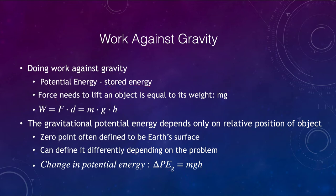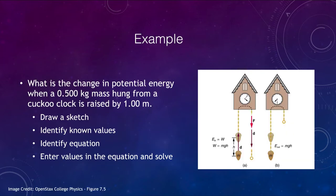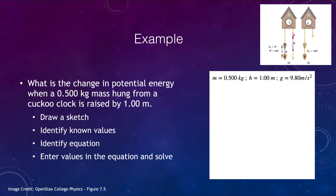Let's look at an example: a cuckoo clock. We want to find the change in potential energy when the mass hung from a cuckoo clock is raised by one meter. We have our sketch here. We know the mass is 0.5 kilograms, the height through which it is raised is one meter, and the gravitational acceleration is 9.8 meters per second squared.